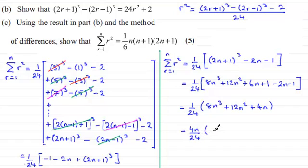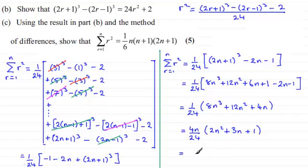Pulling out 4n gives us 4n(2n² + 3n + 1), and the 4 cancels into the 24, giving us 1/6 × n. Then factorising this quadratic, it factorises to (n+1)(2n+1). So we've got (1/6)n(n+1)(2n+1), and that's what we had to show.